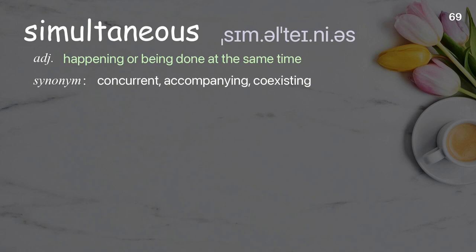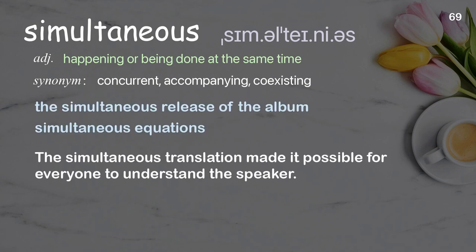Simultaneous: Happening or being done at the same time. Examples: the simultaneous release of the album, simultaneous equations. The simultaneous translation made it possible for everyone to understand the speaker.